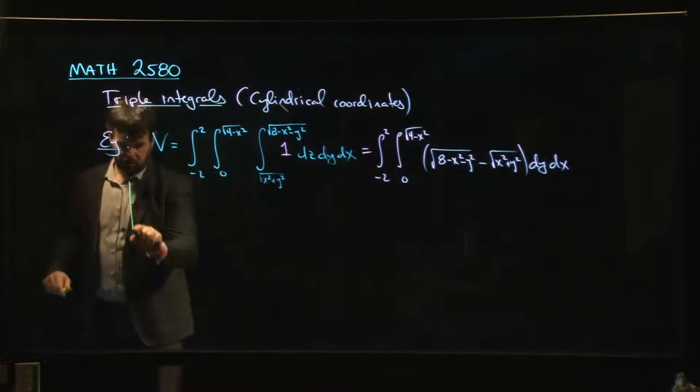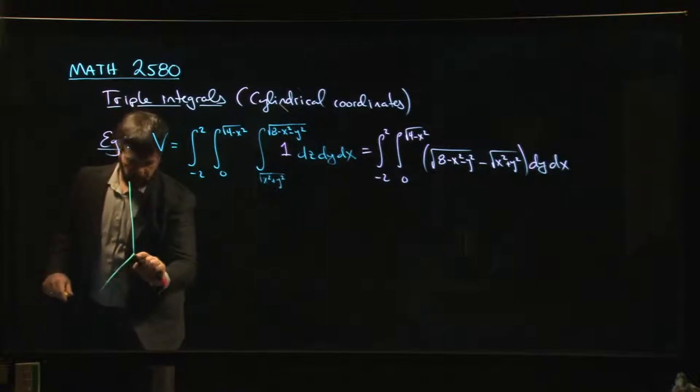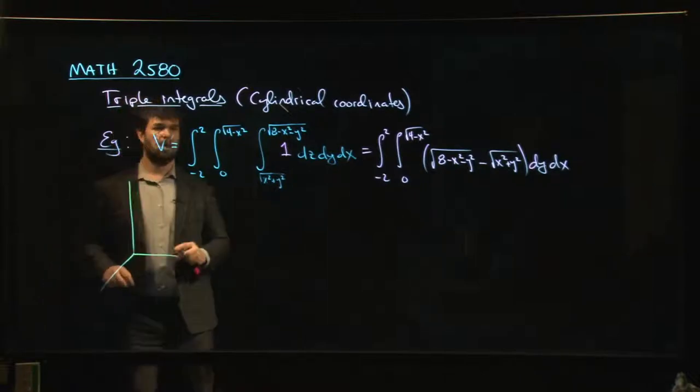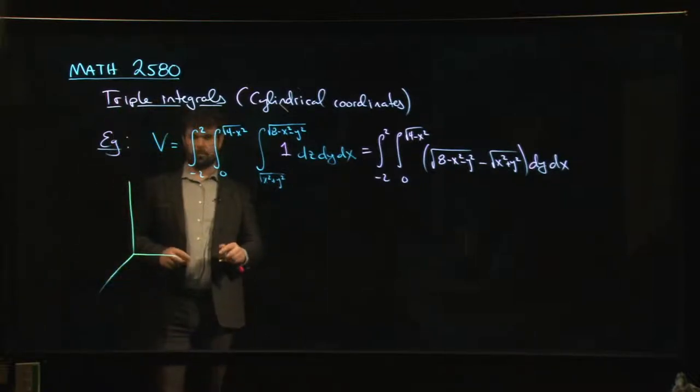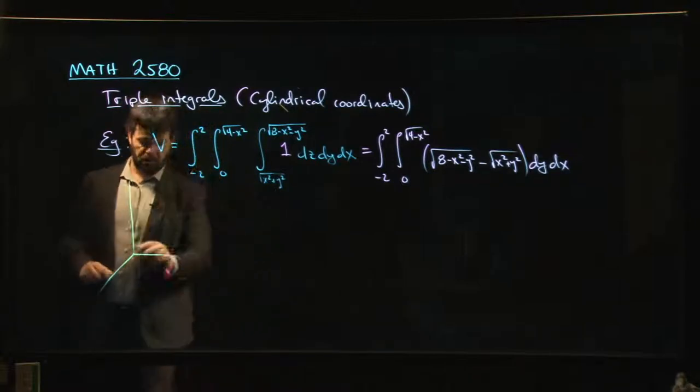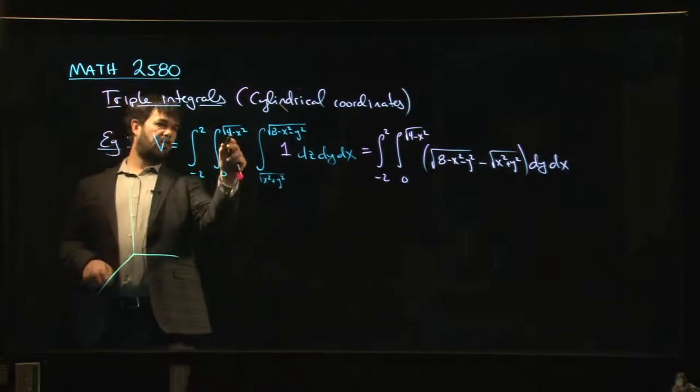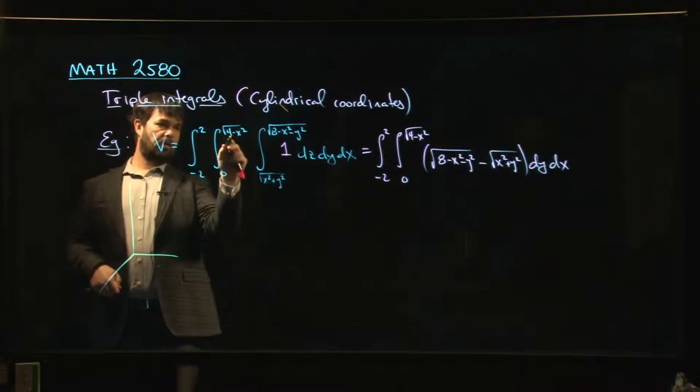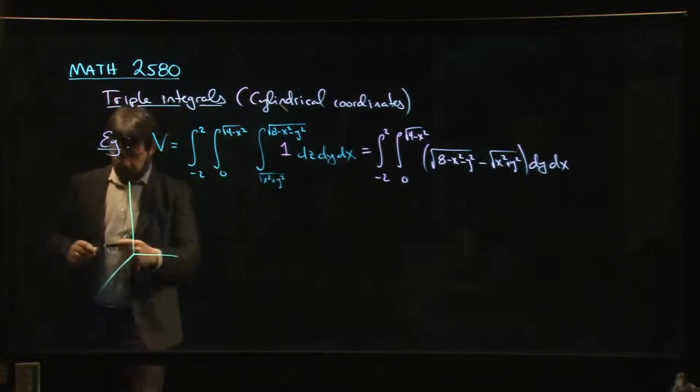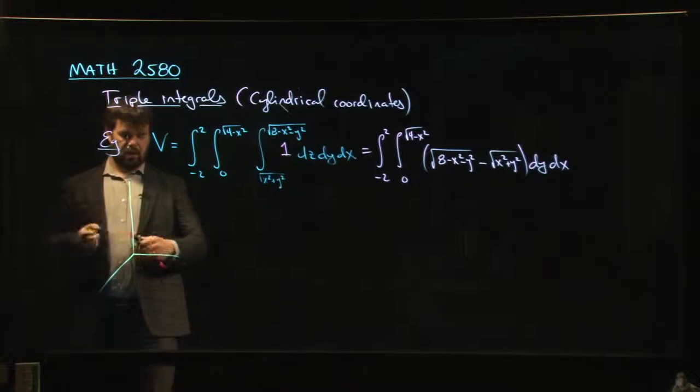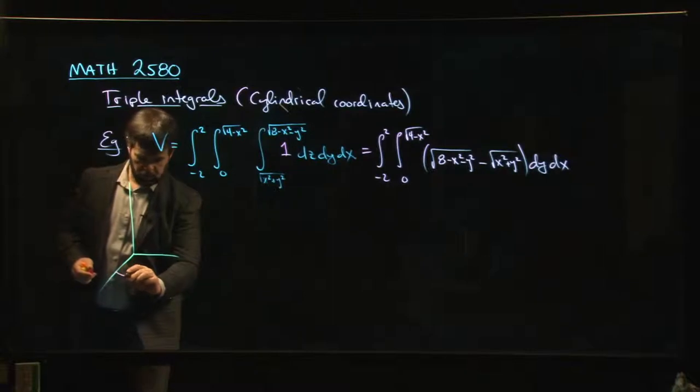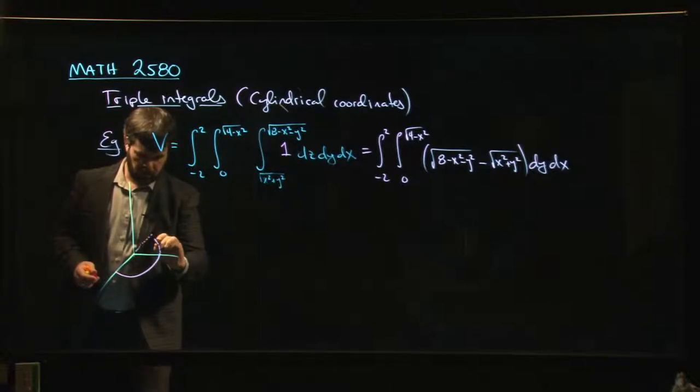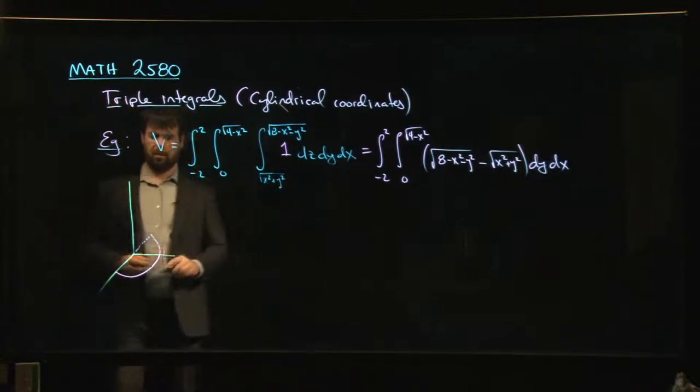In fact, what is the region whose volume I'm computing here? Why don't we take a look at that? Let's draw the picture, see what we're dealing with, and go from there. Well, x goes from minus 2 to 2. For y, we know that this is just a semicircle. This is the top half of a circle of radius 2.